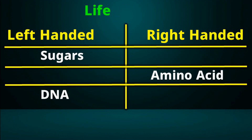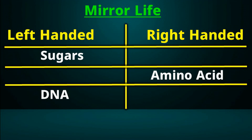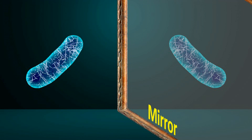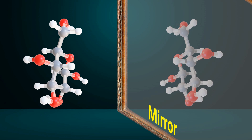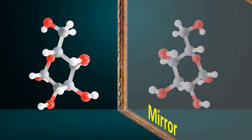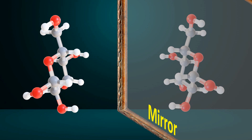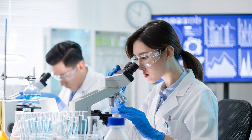The exact opposite combination — left-handed sugars, right-handed amino acids, and left-handed DNA — is theoretically possible. Organisms that use such mirror image molecules instead of the ones used by normal life forms are referred to as mirror life. In other words, mirror life refers to organisms made up of molecules that are the mirror images of those used by conventional life.